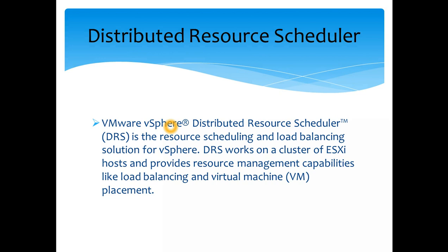Distributed Resource Scheduler — VMware vSphere DRS — is the resource scheduler and load balancing solution for vSphere. DRS works on a cluster of ESX hosts and provides resource management capabilities like load balancing and virtual machine placement, deciding which virtual machine needs to sit where.